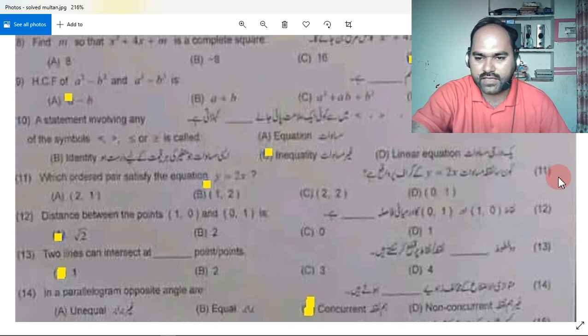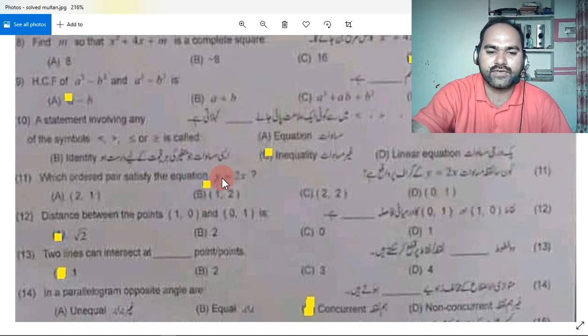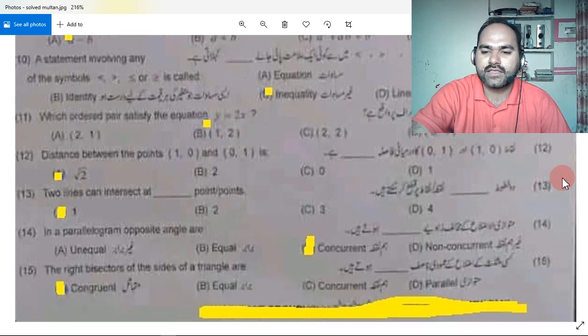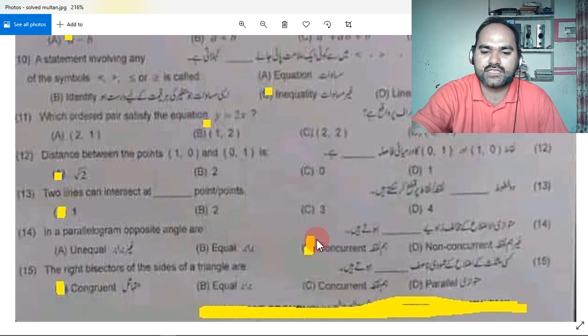11 number is correct, 12 number is correct, A is correct. 13 number is correct. 14 is correct.